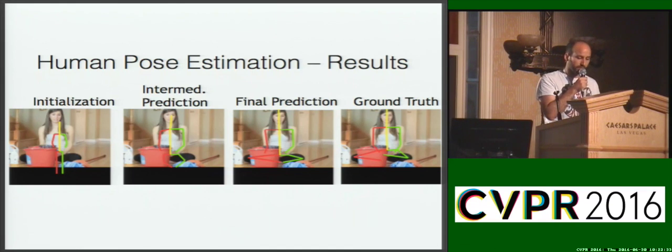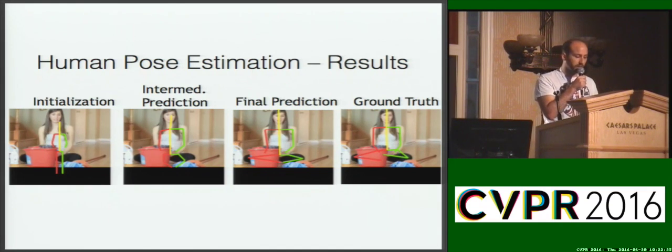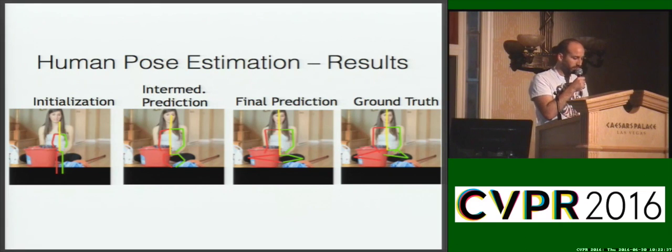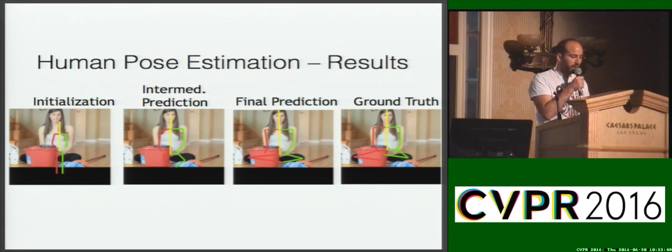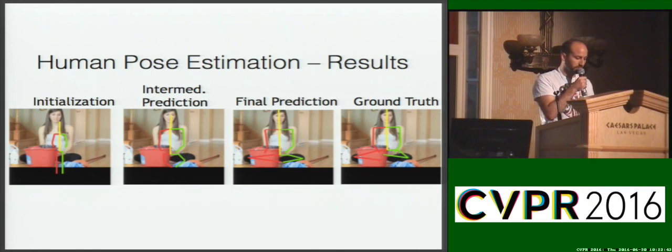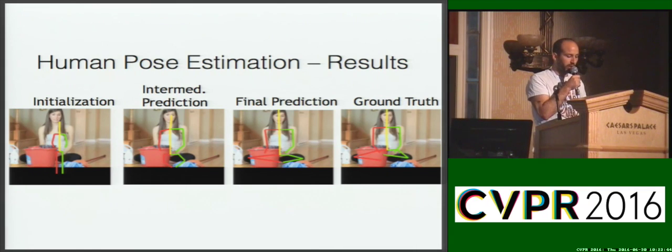So here's an example result. The intermediate pose, and the final result after three iterations. The model predicts a plausible configuration for the right leg and the...